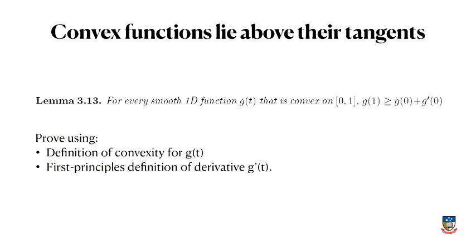If you write down the definition, what it means for g to be convex, so the definition of convexity for g of t, and then you have a derivative in that function, so you unwrap it using the first principles definition of the derivative g prime of t, rearrange things, and that inequality should drop out straight away.